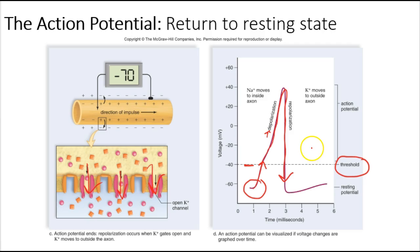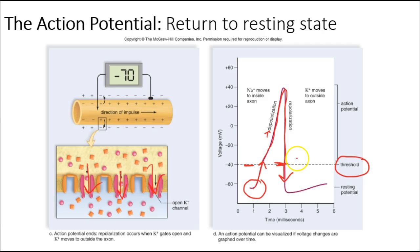An action potential is information being passed along the neuron. How do you convey intensity if the action potential either happens or doesn't happen? The intensity of a stimulus is encoded by the frequency of action potentials. For something intense, action potentials occur frequently; for something less intense, action potentials come at a much slower rate.